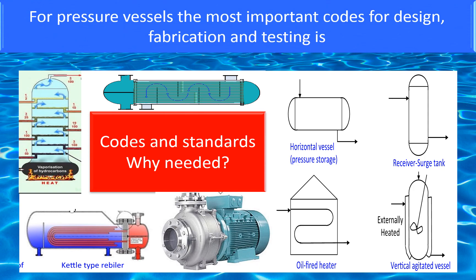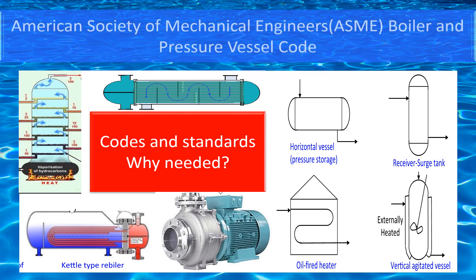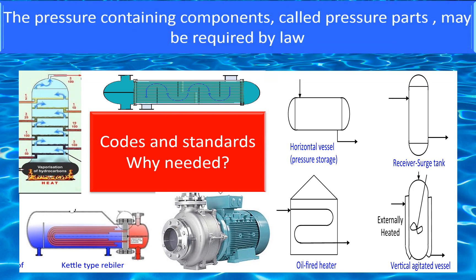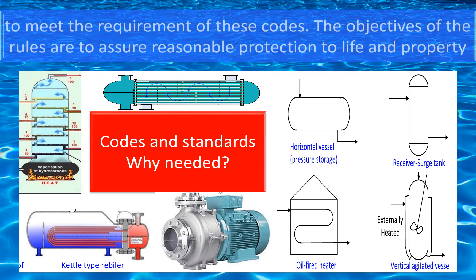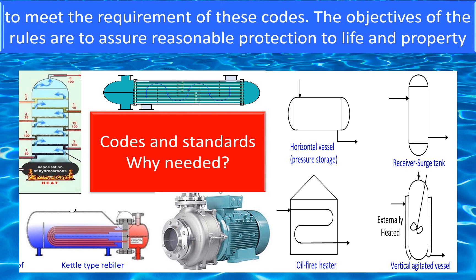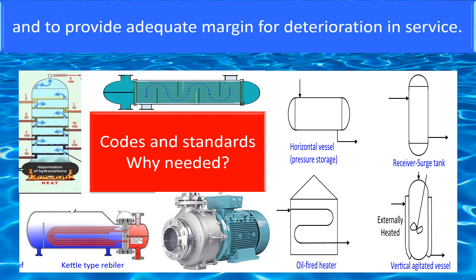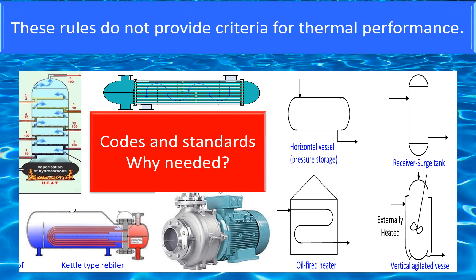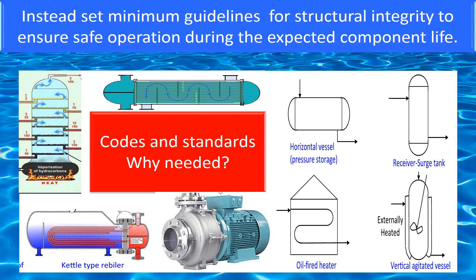For pressure vessels, the most important code for design, construction, and testing is the American Society of Mechanical Engineers (ASME) Boiler and Pressure Vessel Code. The pressure-containing components, called pressure parts, may be required by law to meet the requirements of these codes. The objectives of the rules are to assure reasonable protection to life and property, and to provide adequate margin for deterioration in service. These rules do not provide criteria for thermal performance; instead, they set minimum guidelines for structural integrity to ensure safe operation during the expected equipment life.